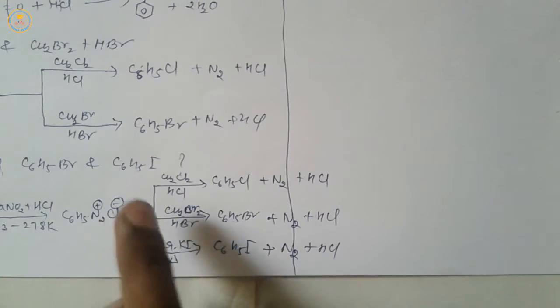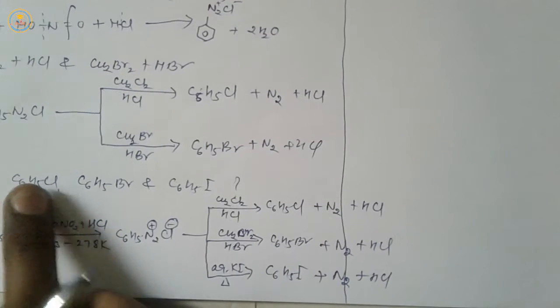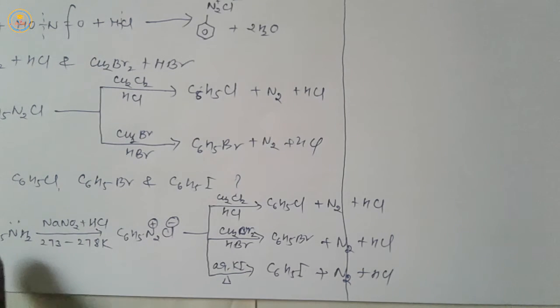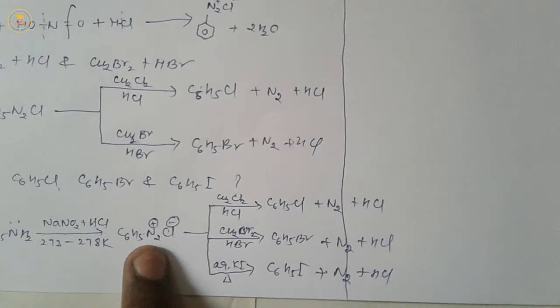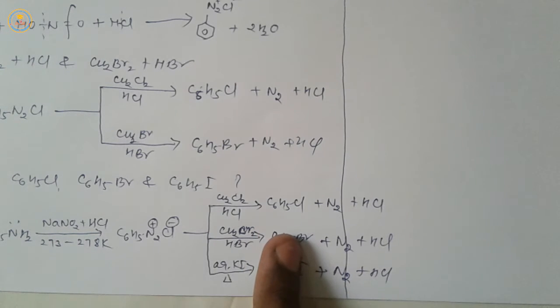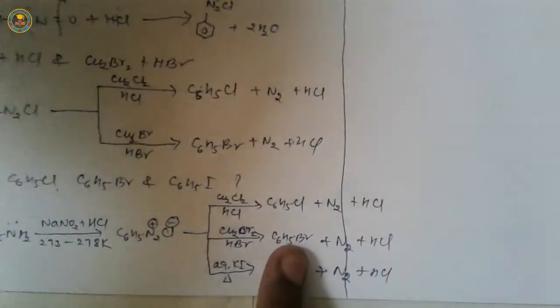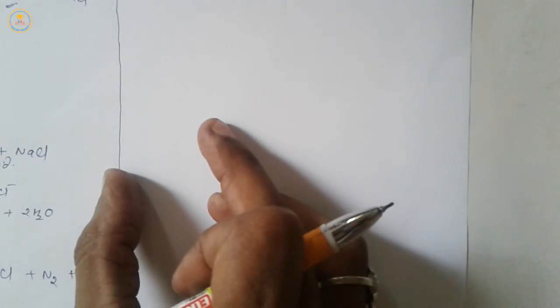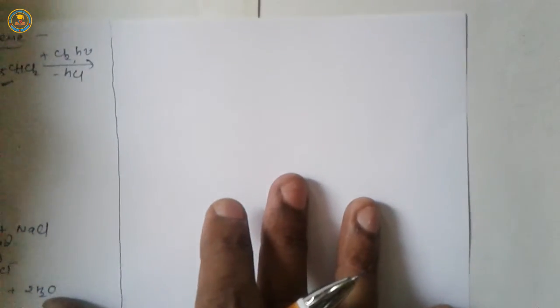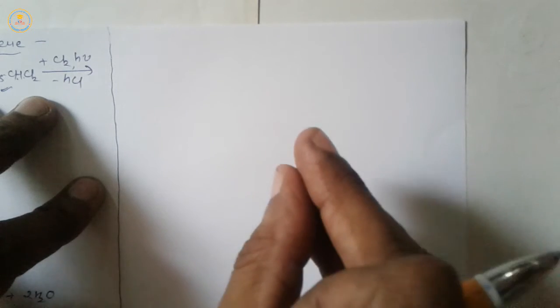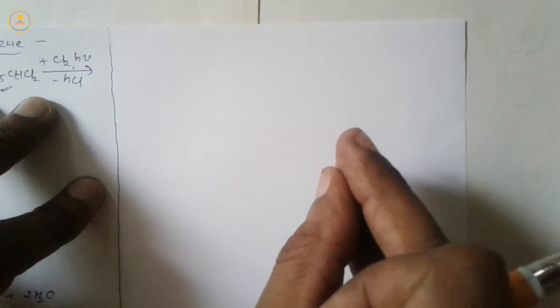To summarize: how will you prepare chlorobenzene, bromobenzene, and iodobenzene from aniline? First, via the diazotization reaction, aniline is converted into benzene diazonium chloride. Then via the Sandmeyer reaction, benzene diazonium chloride is converted into chlorobenzene and bromobenzene respectively. These questions can be asked in Board Examinations — very, very important. Watch all videos with copy and pen.